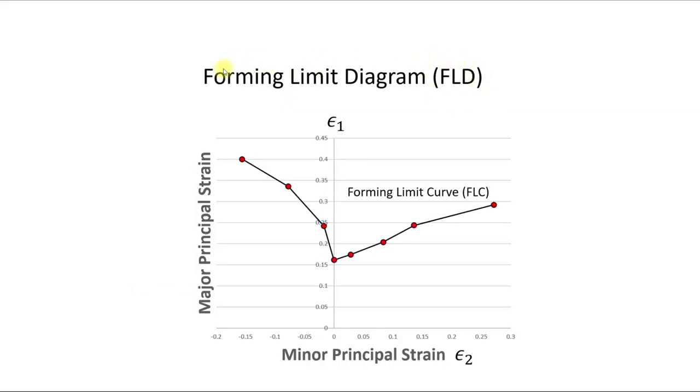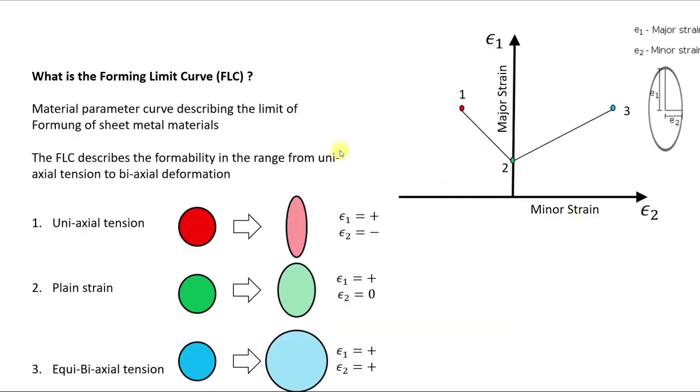FLD stands for Forming Limit Diagram and in this Forming Limit Diagram we have the Major Principle Strain versus the Minor Principle Strain and then we get a Forming Limit Curve, the FLC. So what is the FLC?